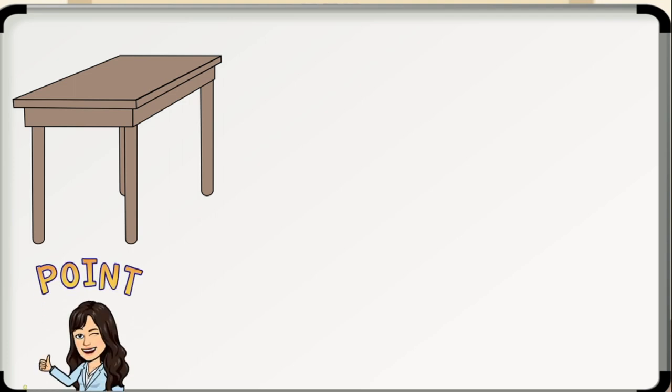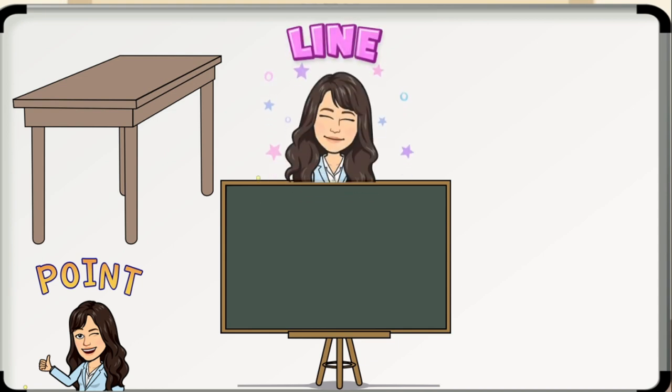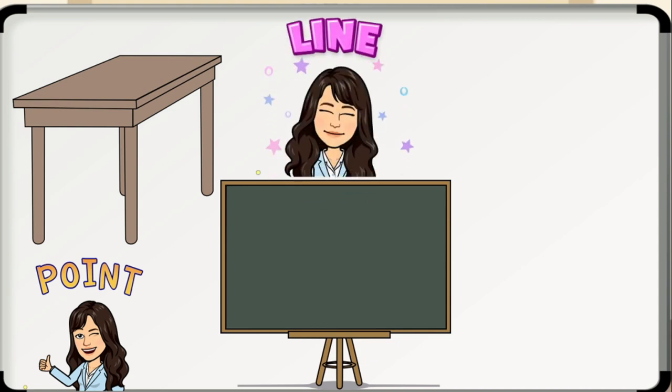Number two. Edge of a blackboard. Is it a point, a line, or a plane? Correct. It is a representation of a line. And number three. Top of a box. Yes, it is a representation of a plane.